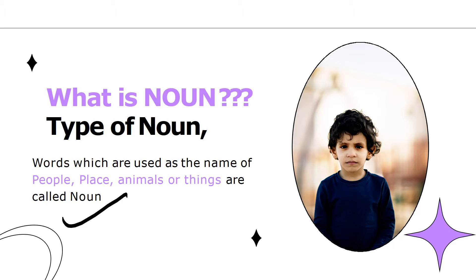A noun is a word that describes a person, place, thing or idea. Examples of nouns include names like Dubai, locations like Delhi, objects like table in the physical world, or objects and concepts that do not exist in the physical world — for example, a dream or a theory. All of these are known as nouns.